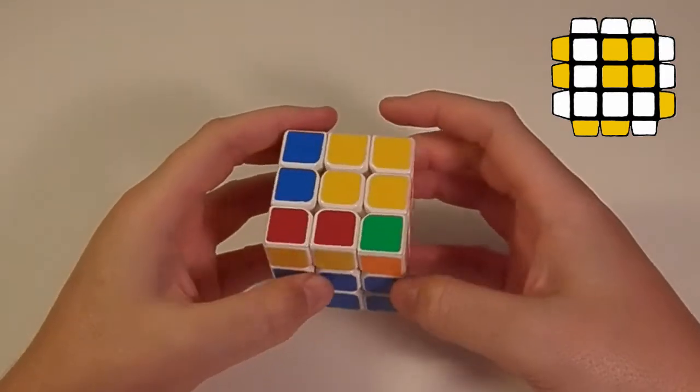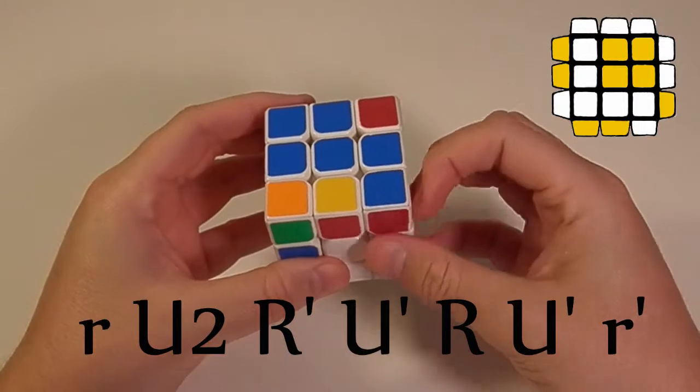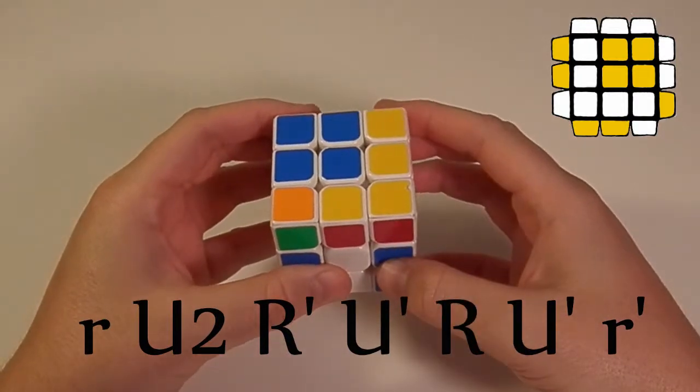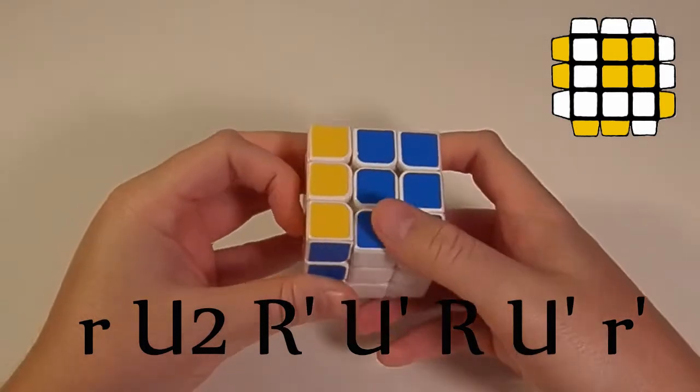And the way I execute this case is by doing a small r, u2, r prime, u prime, r, u prime, small r.